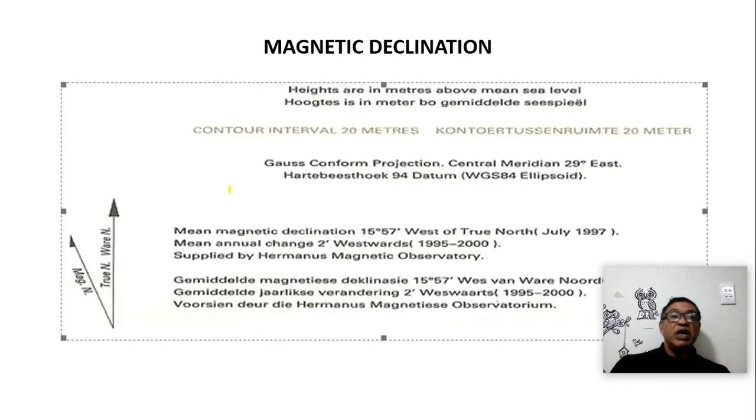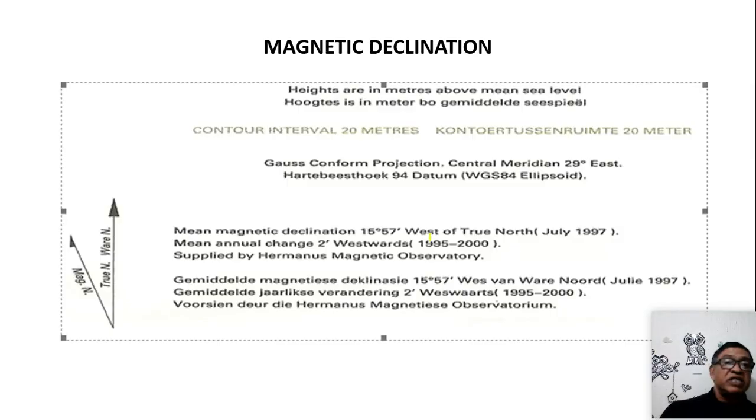Then I need to work out my magnetic declination. On the side of the topographic map, you will find this information appearing. It will show you a little arrow showing you the magnetic declination area. When this moves westwards, it gets bigger, so we add. When this line moves eastwards, it gets smaller and we subtract.